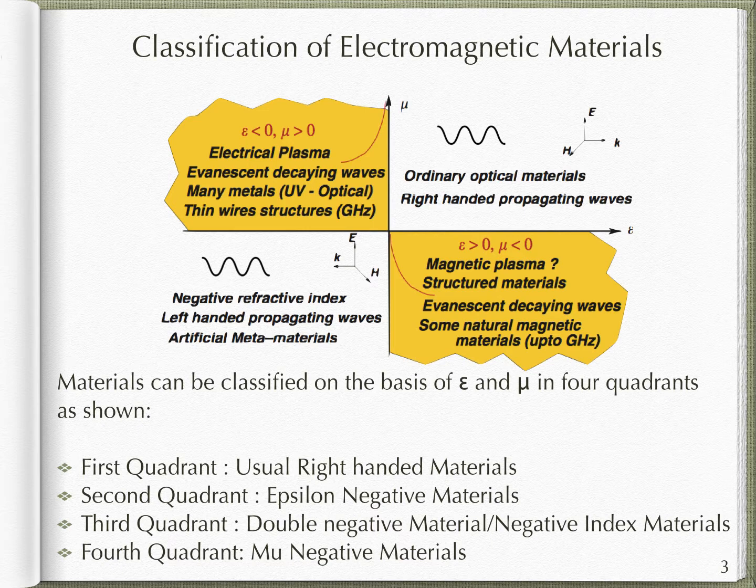These materials are also called left-handed materials or double negative materials. Due to negative mu and negative epsilon, the refractive index of this medium is also negative. Thus, these materials are also called negative index materials. Electric vector E, magnetic vector H, and wave vector K form the left-handed triad as shown.